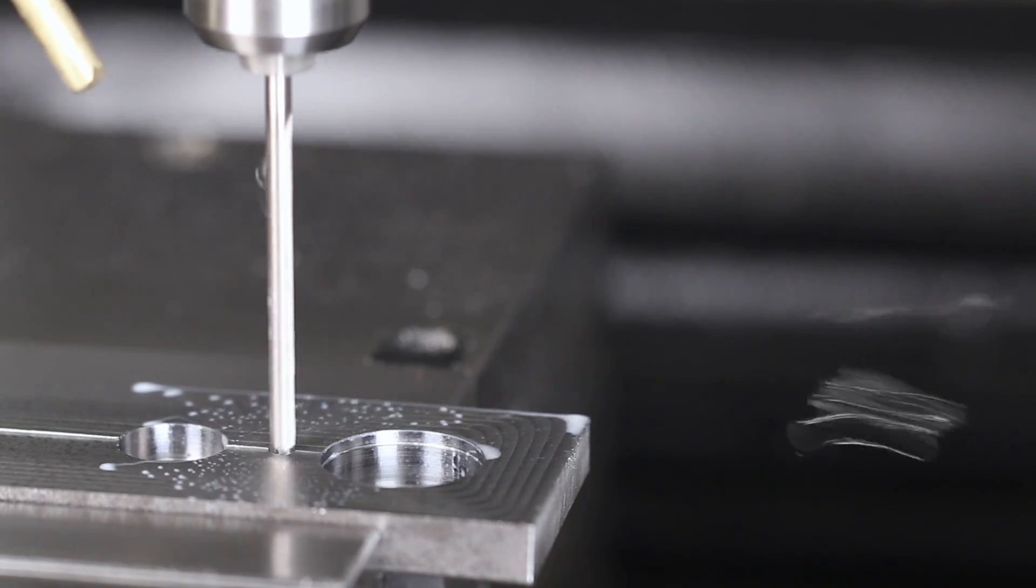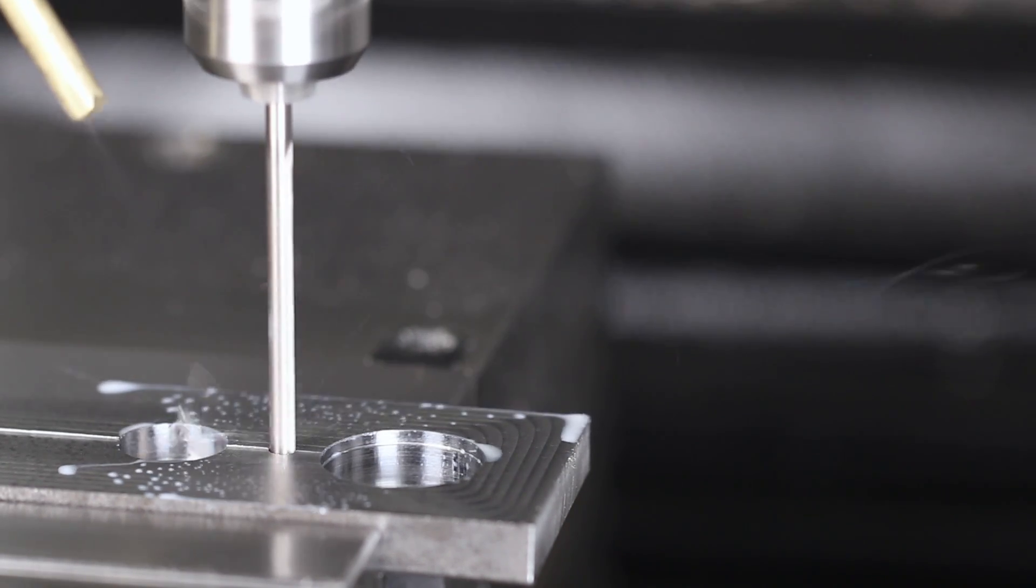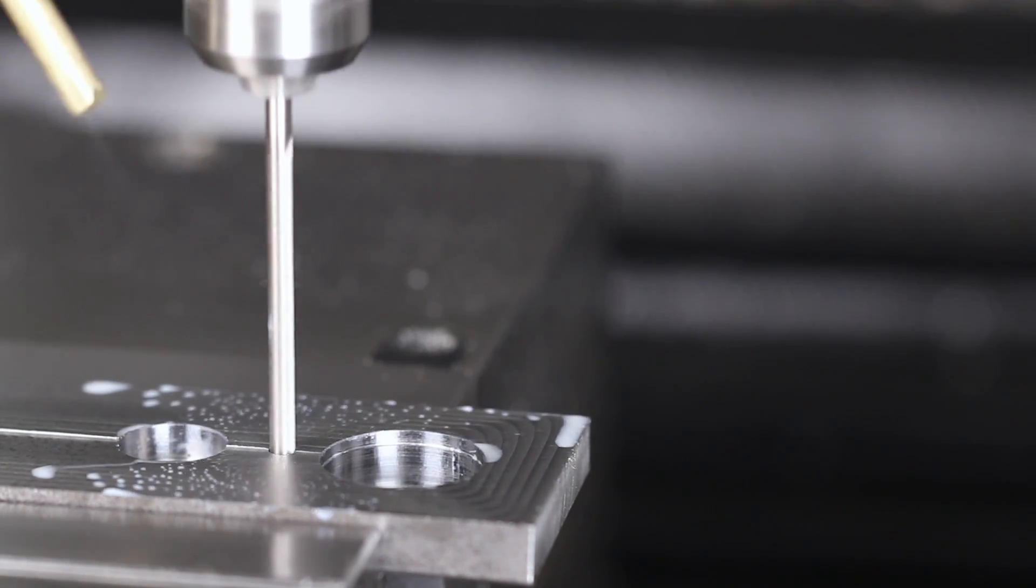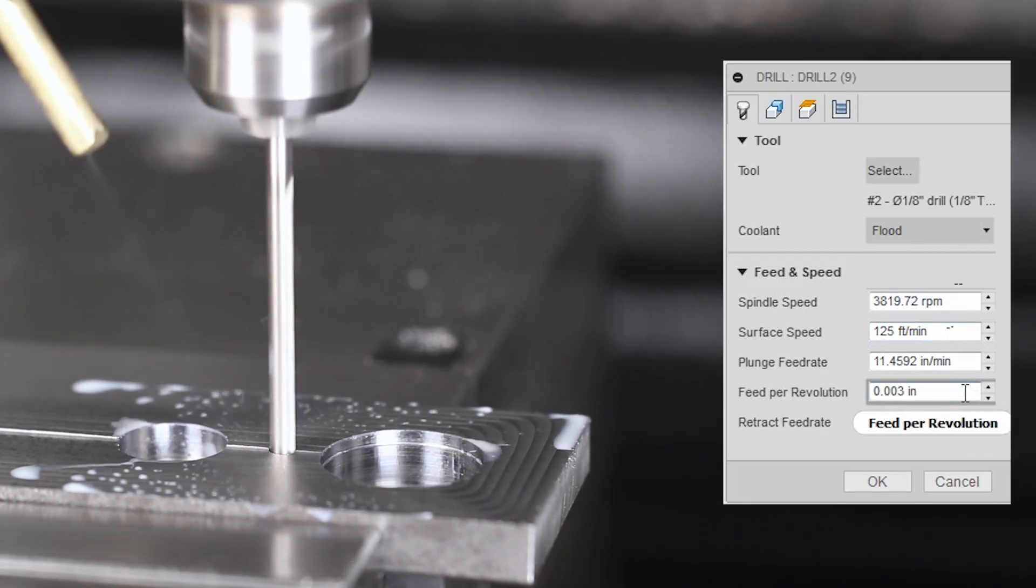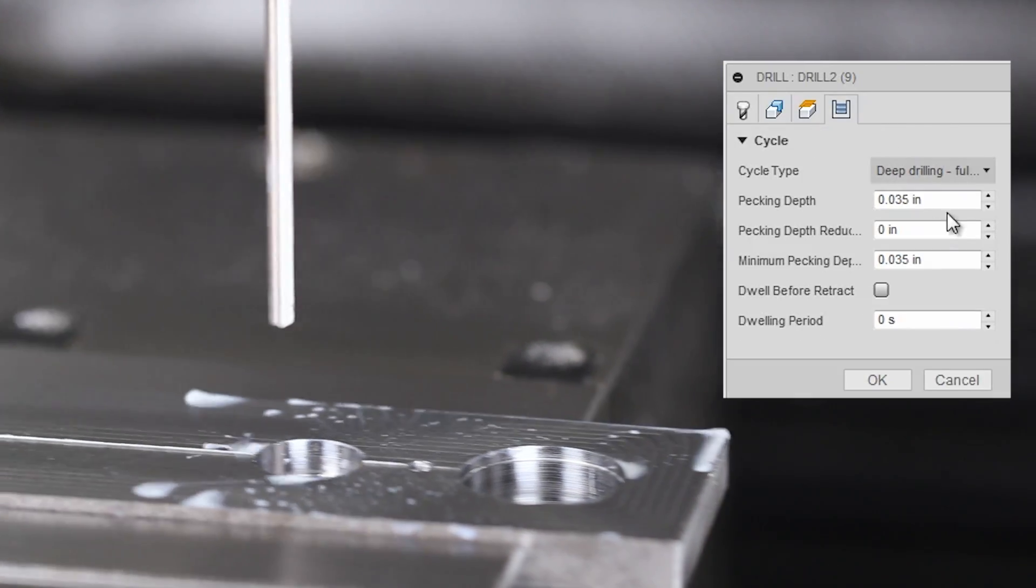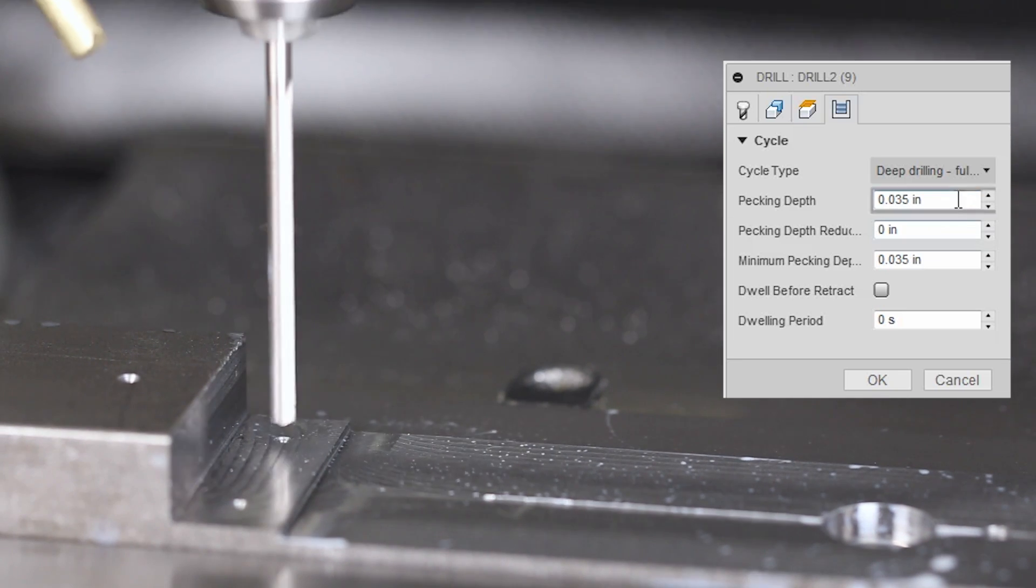1-1/8 inch twist drill. This will be the end of our bandsaw cut on the split bar. 125 surface feet a minute, 3 thou per rev, which is 11 inches per minute. Pecking in 35 thou increments.